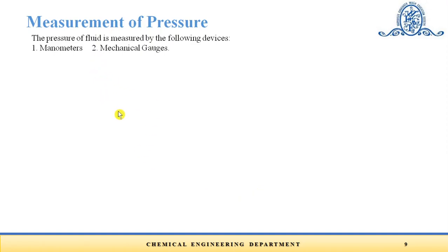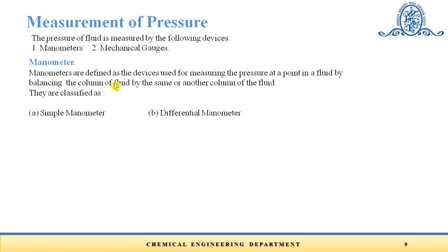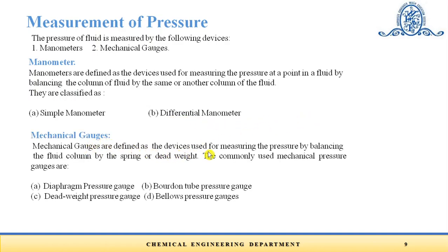The pressure of a fluid is measured by the following devices: manometers and mechanical gauges. Manometers are devices used for measuring pressure at a point in a fluid by balancing a column of fluid by the same or another column of fluid. They are classified as simple manometers and differential manometers. Mechanical gauges measure pressure by balancing a fluid column by a spring or dead weight. Commonly used mechanical gauges are the diaphragm pressure gauge, Bourdon tube pressure gauge, dead weight pressure gauge, and bellows pressure gauge.